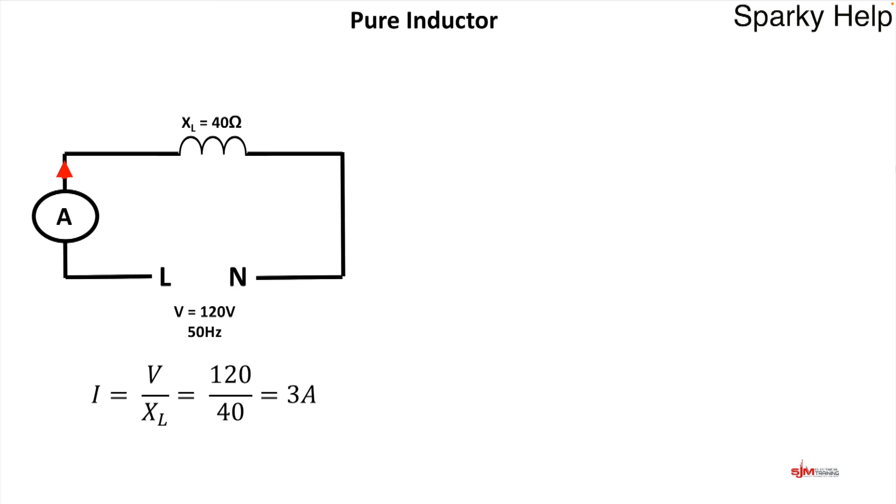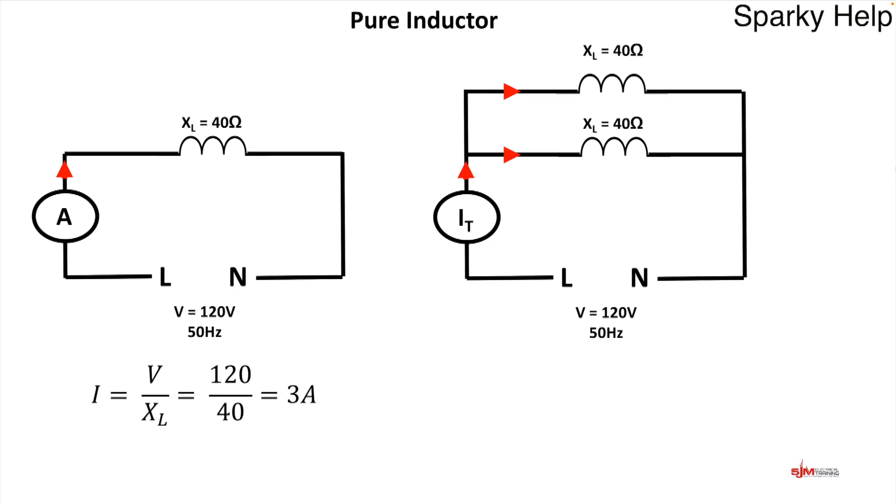So there we have an XL of 40 Ohms. And we can work out the current that would flow, so 120 divided by 40 gives 3 amps. Let's put two of them in parallel with each other, and again we can work out the current in each branch.